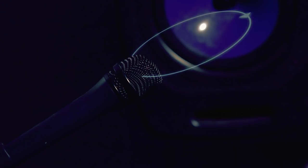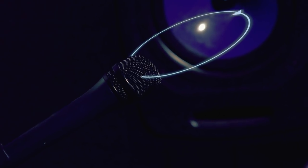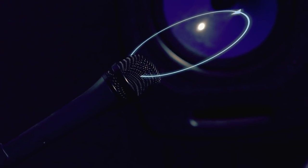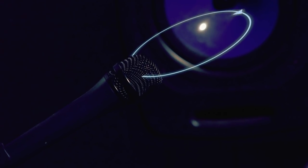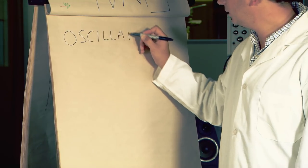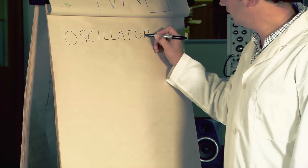Almost everyone has heard this annoying sound before. When a sound is amplified, then amplified again and again, you get feedback. If you control the feedback by means of a filter, you can get a stable tone. An amplifier with a filter-controlled feedback loop is called an oscillator.